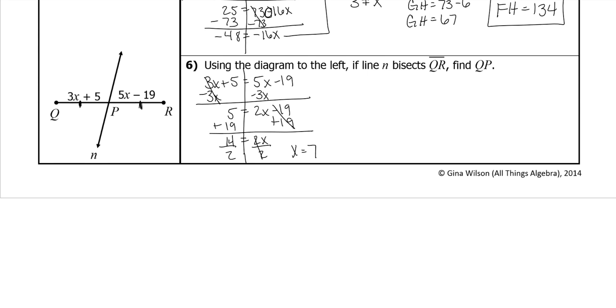Bring my 2x down and these 19s cancel. Divide by 2 on both sides, and x is 7. Is that what we're looking for? No, we're looking for QP. And QP is right here, 3x plus 5. So let's plug in our x which is 7. 3 times 7 is 21. 21 plus 5 is 26, which is what QP is. That's the end of our notes.